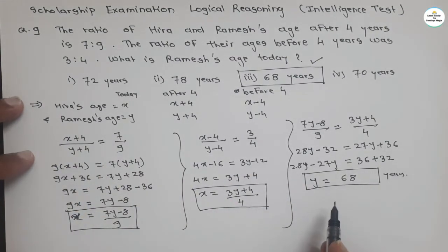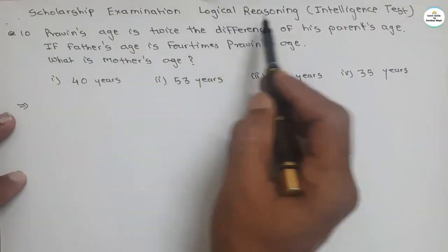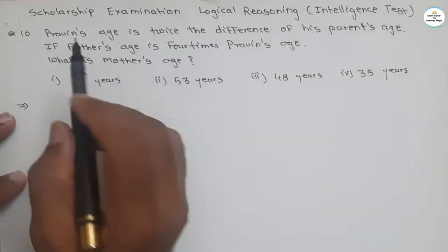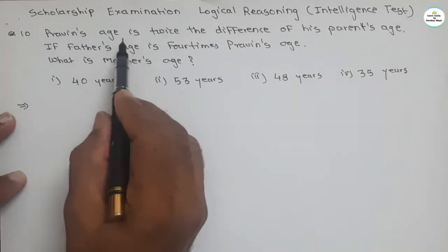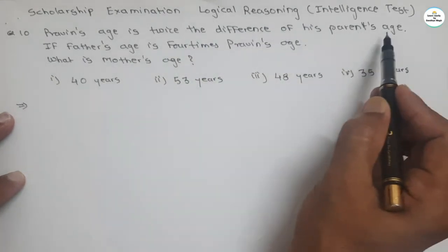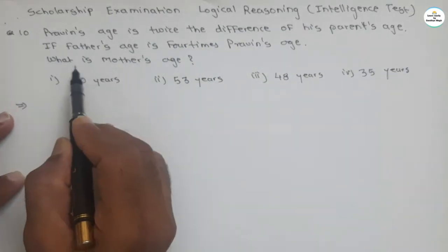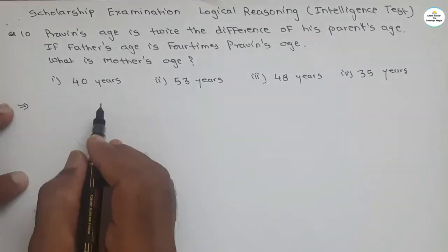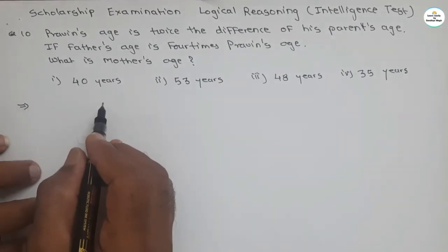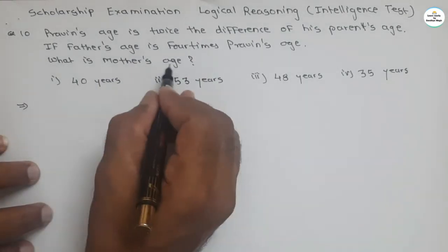In the same way, let's see the second question of this video. It is also based on logical reasoning and intelligent test, useful for scholarship examination. The question is: Rameen's age is twice the difference of his parents' ages. If the father's age is 4 times Rameen's age, what is the mother's age? We will assume the ages of the father and mother.